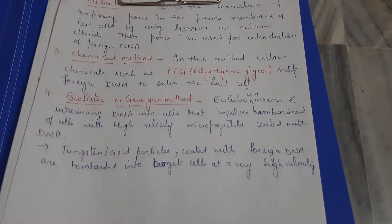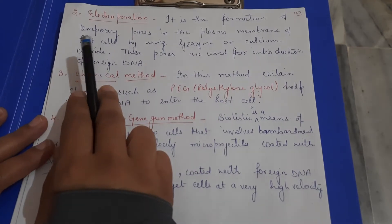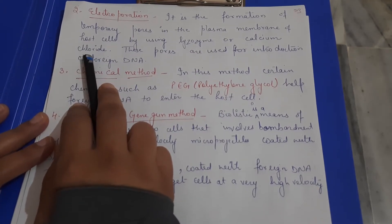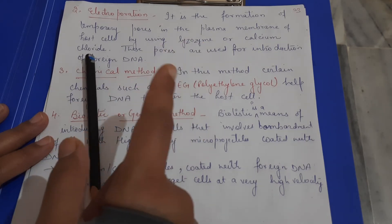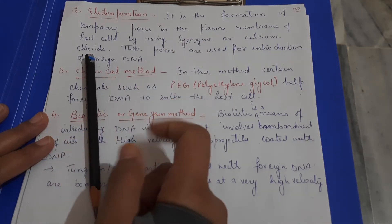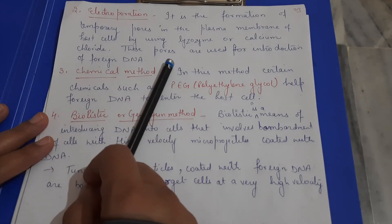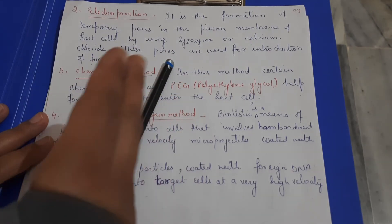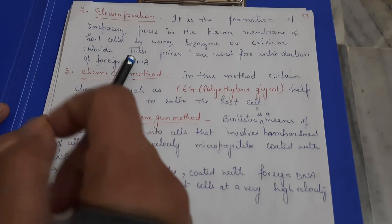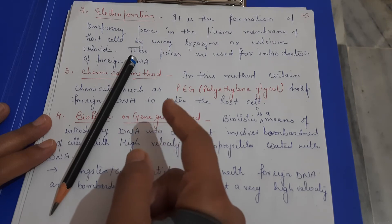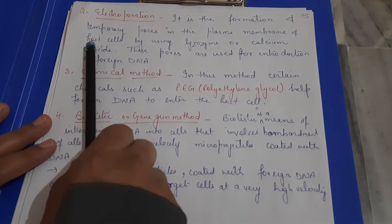The next method is electroporation. In this method, an electric field is applied to create holes in the plasma membrane. By using the electric field, pores are created in the plasma membrane, making it easy for the foreign DNA to enter the host cell.